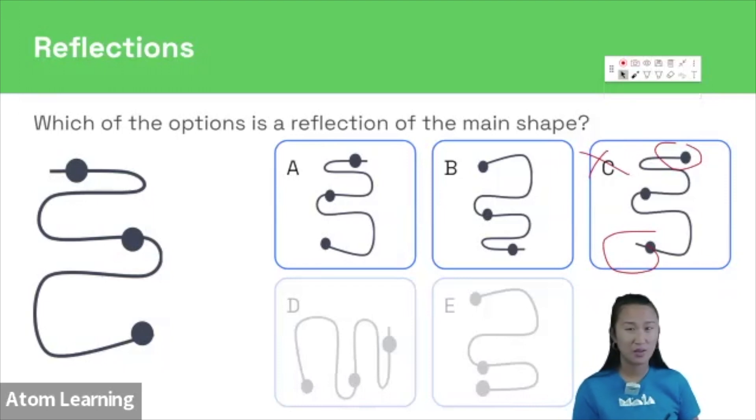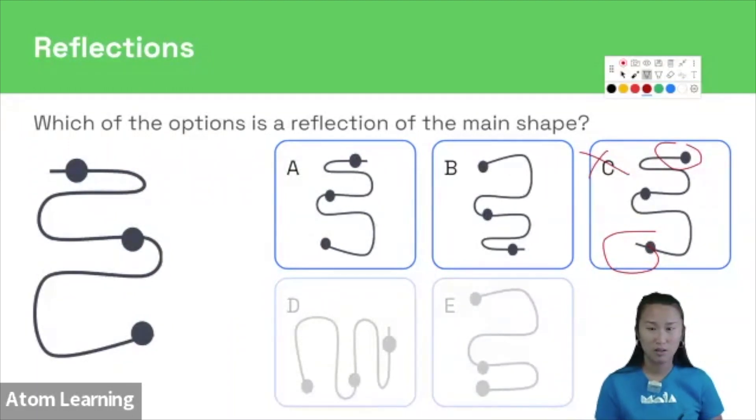This leaves us with A. It has been reflected across a vertical line, so across a line that goes down like that if I were straight.